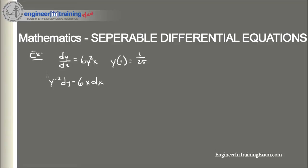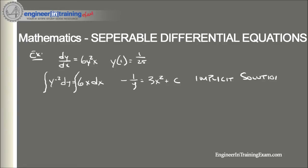Now all we need to do is integrate both sides, and we find that this comes out to be −1/y = 3x² + C. So now we have an implicit solution, because it's not written in the form y = y(x).